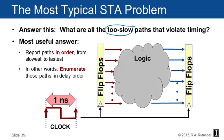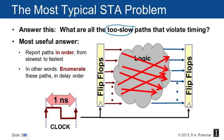It doesn't help if you just report one violating path. In a big logic network with millions of gates, the first time you synthesize or optimize it, you could have tens of thousands of paths in violation. You need to be able to report all of them.